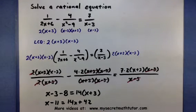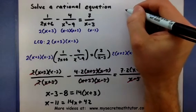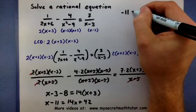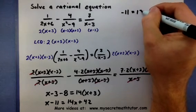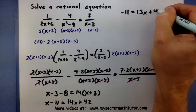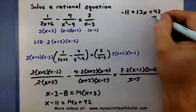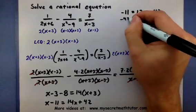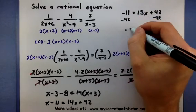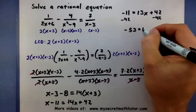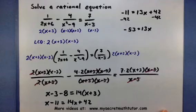Let's get our x's on the same side. So I'm going to get a negative 11 equals 13x plus 42. Let's go ahead and subtract 42 from both sides. So a negative 53 equals 13x.